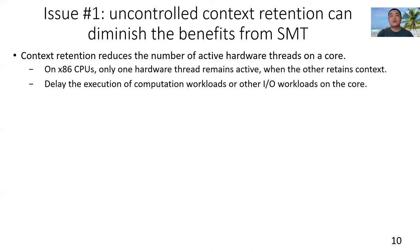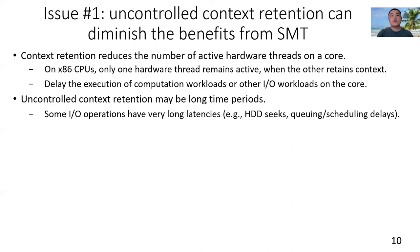Although the rationale of context retention mechanism is straightforward, maximizing its potential on improving IO throughput and efficiency needs to address several technical issues. First, uncontrolled context retention can diminish the benefits from SMT. This is because context retention reduces the number of active hardware threads on a core, and thus may delay the execution of computation workloads or other IO workloads on the core.